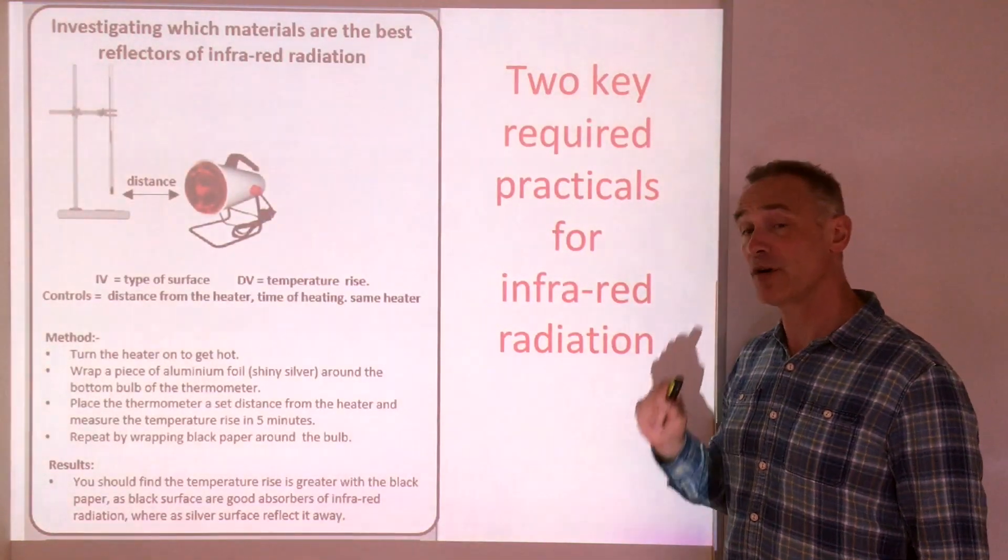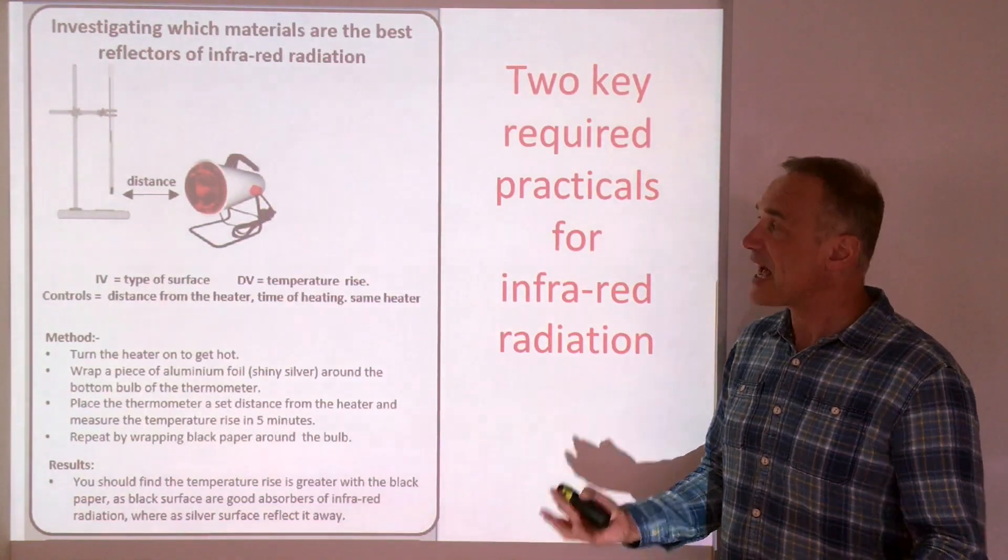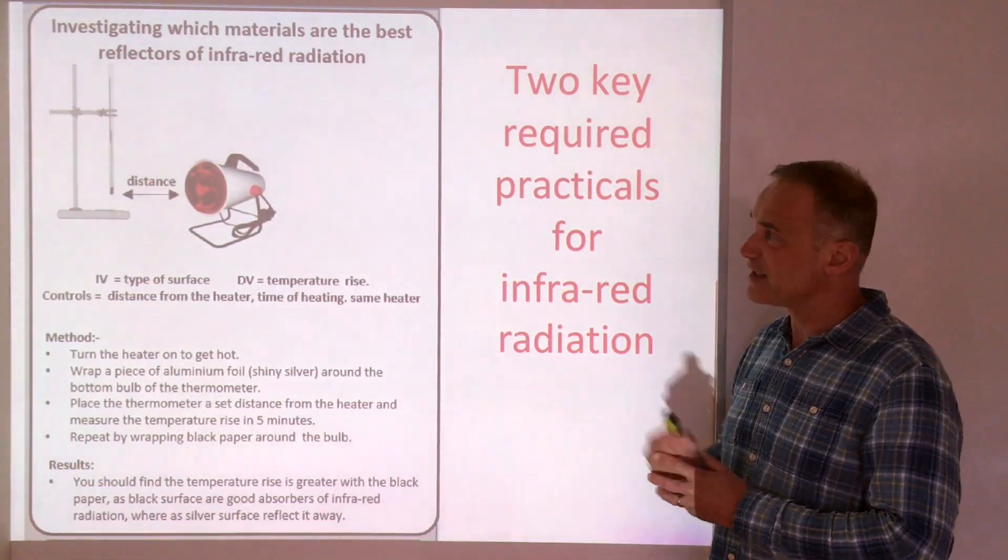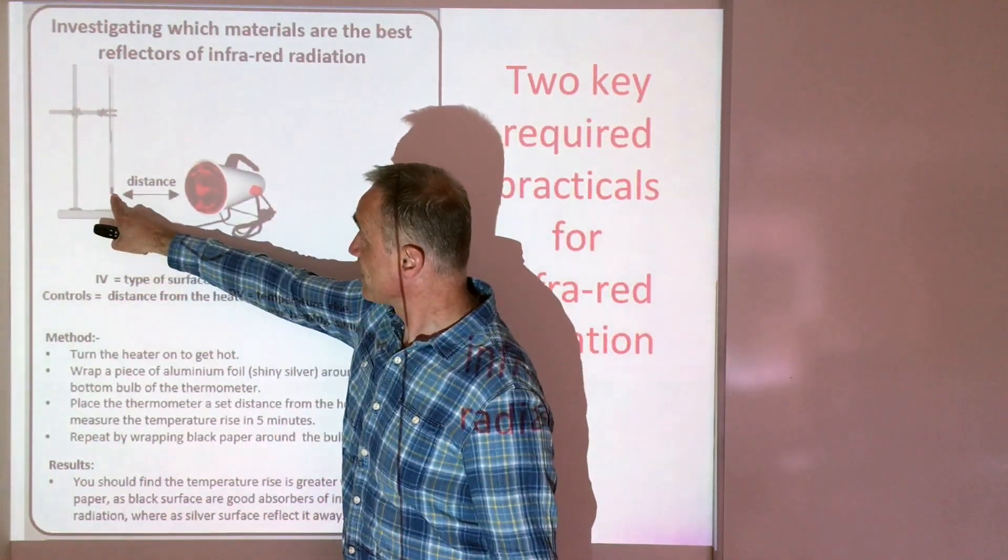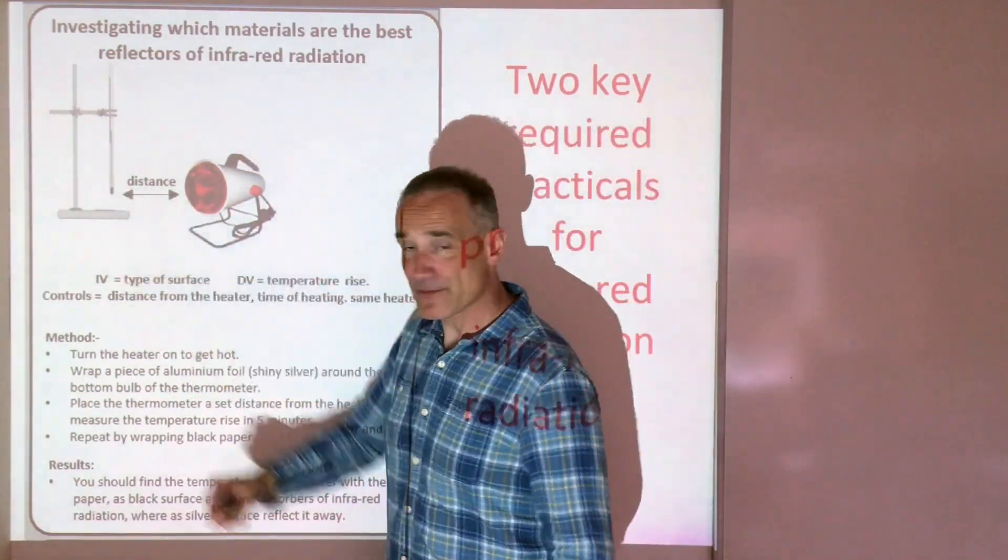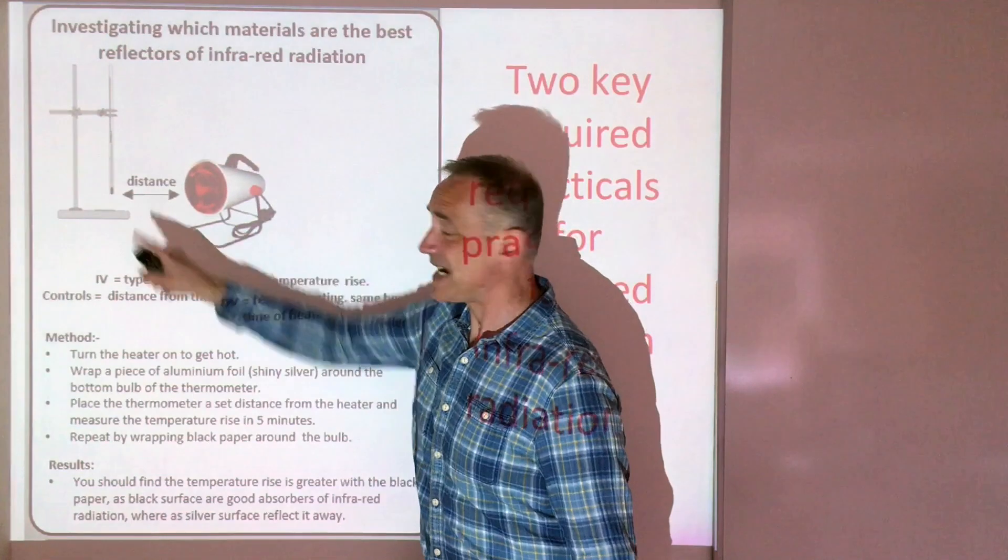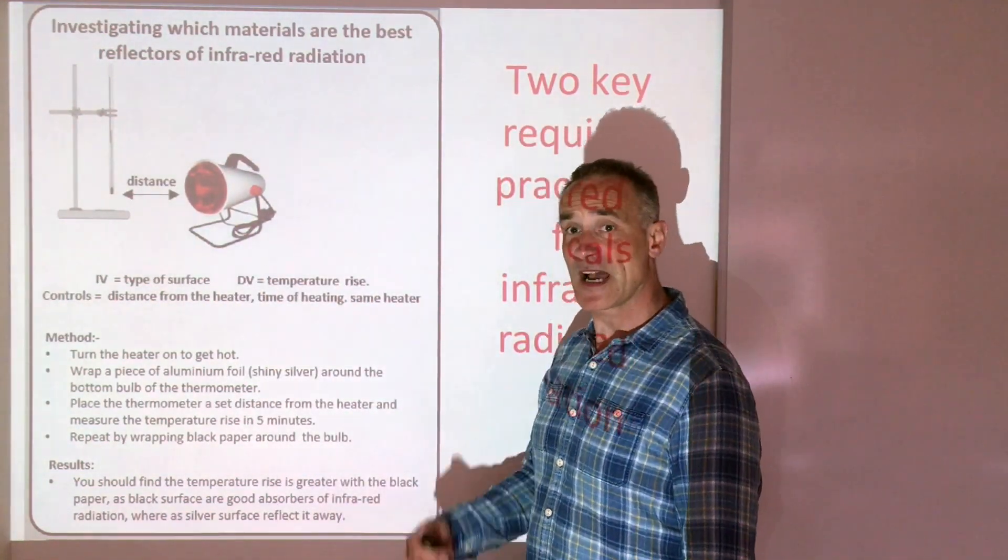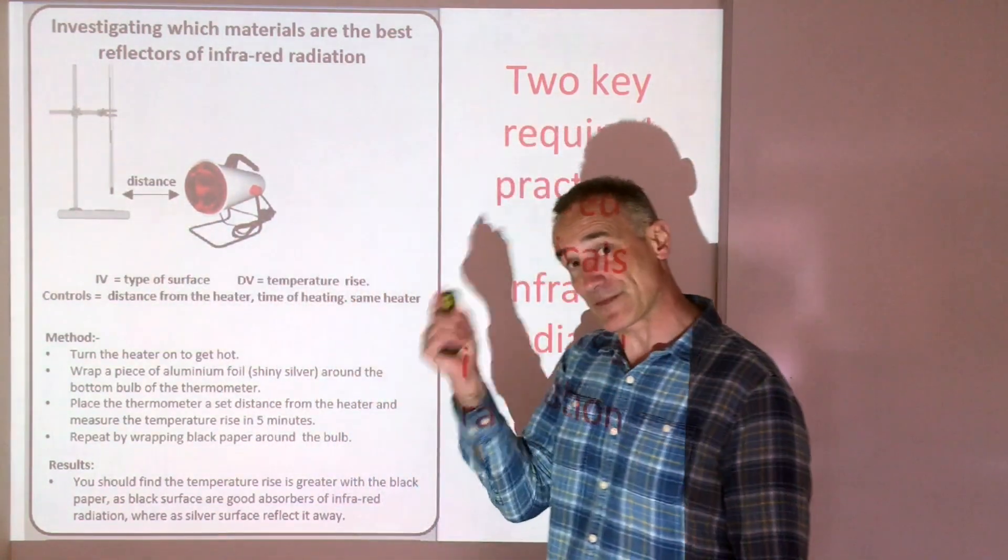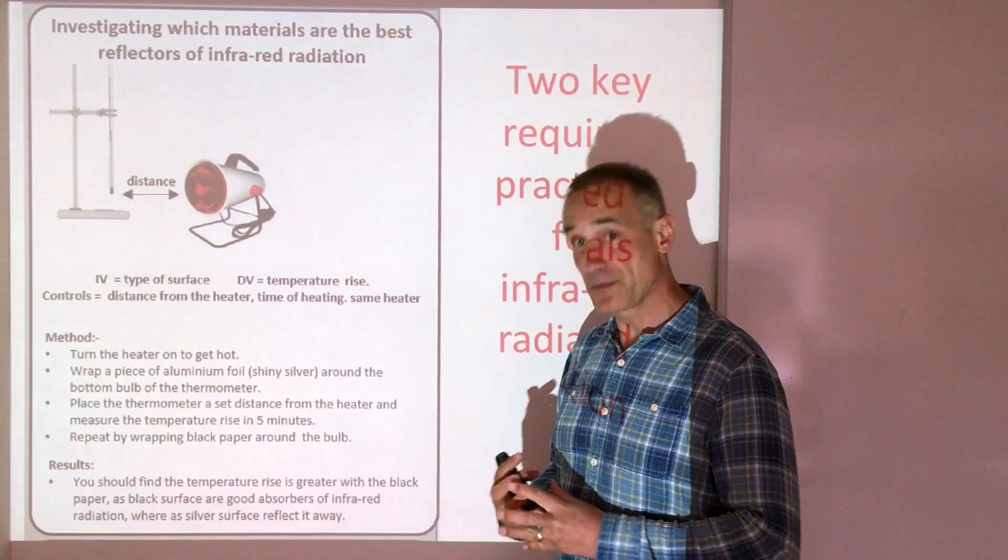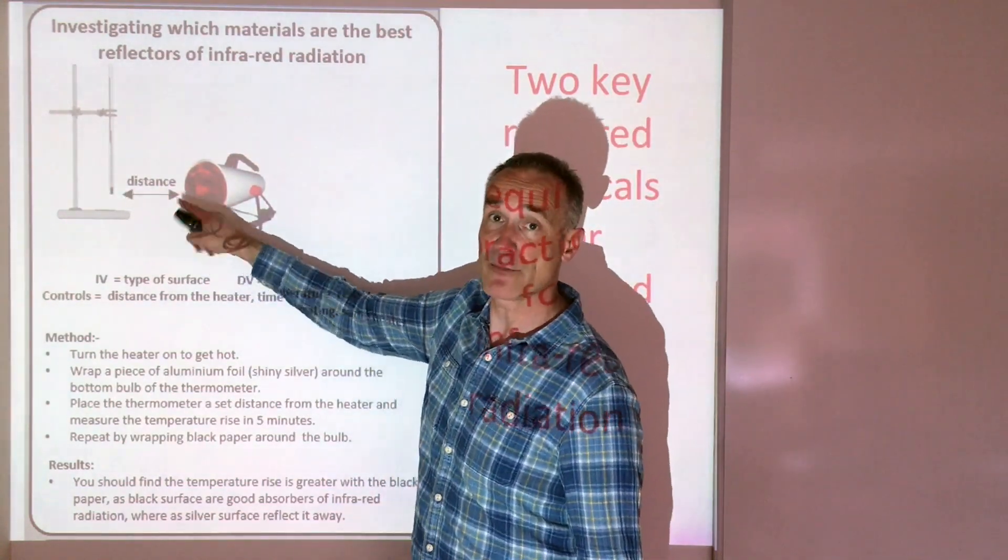You also need to know two required practicals for infrared. The first one is proving that silver surfaces reflect infrared heat energy and dark surfaces, matte black surfaces, absorb infrared. This is a really simple experiment. All you need is an infrared heat lamp, a stop clock, a thermometer, and some black and silver paper. You first wrap some black paper around the bottom of the thermometer and then you set your heat lamp at a set distance. Turn on the stopwatch and record the temperature rise in say five minutes. You then repeat it but with silver wrapped around the bulb instead and of course you'll find the black absorbs the heat energy more as the temperature rises more. The only thing you've got to remember in your exam is to say that the distance must be kept the same as your control variable.